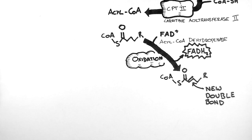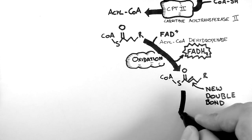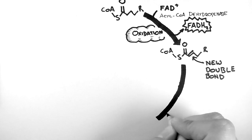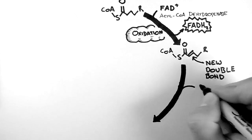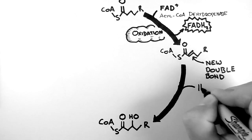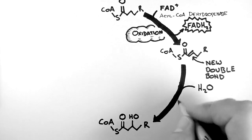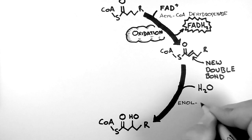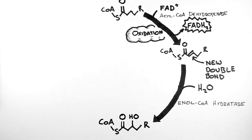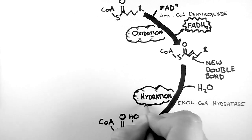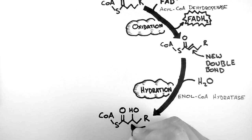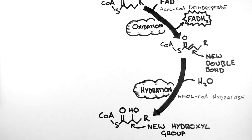This is known in fatty acid nomenclature as a double bond between the alpha and beta carbons. This molecule with its new double bond gets water added across that double bond, forming an L-beta-hydroxyacyl-CoA. The enzyme involved here is called enoyl-CoA hydratase. Because water is added, we call this process hydration. The end result is that we get a brand new hydroxyl group on our beta carbon.